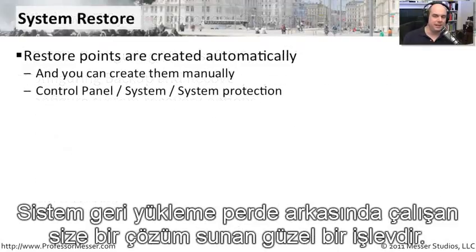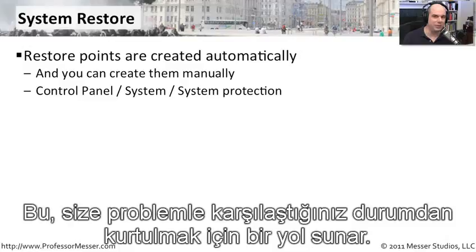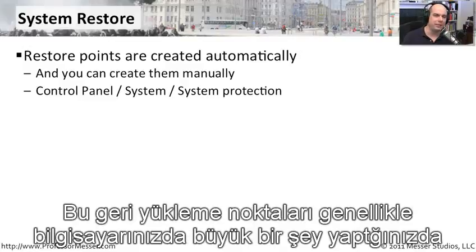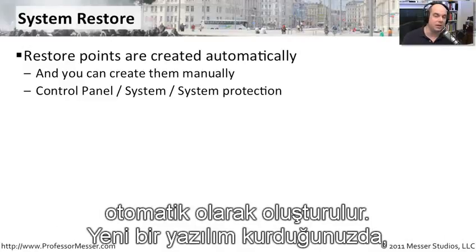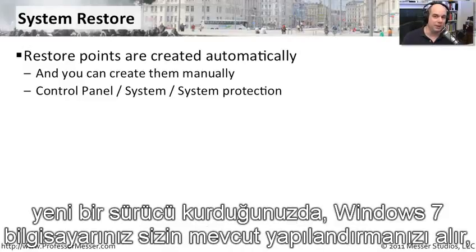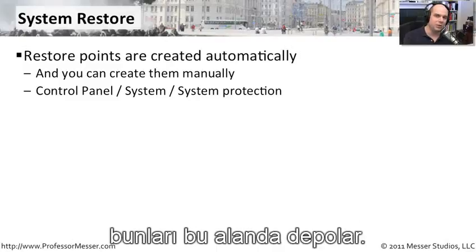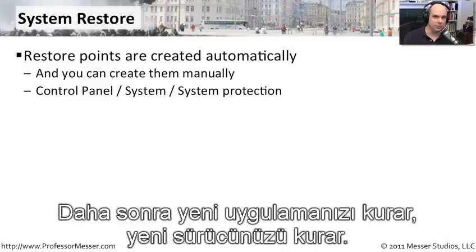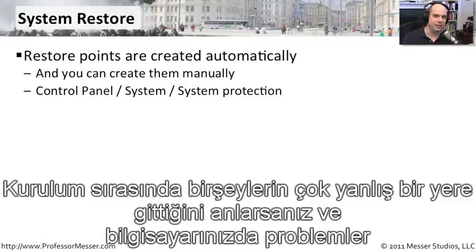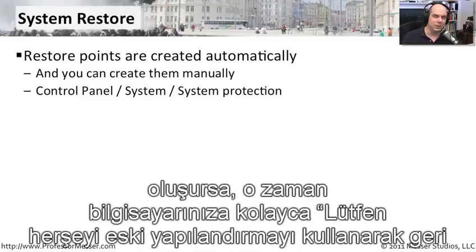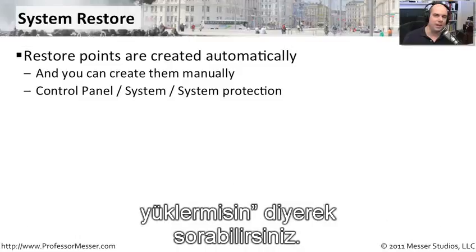System restore is a nifty function that works behind the scenes to give you a way to roll back your system should you run into a problem. These restore points are generally created automatically when you do something big on your computer — install new software or a new driver. Your Windows 7 computer takes your current configuration, stores it, and then installs your new application or driver. If something went horribly wrong during that installation, you can simply ask Windows to restore everything from that old configuration.